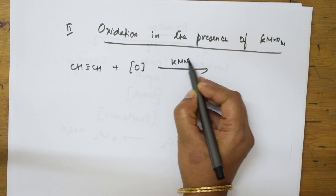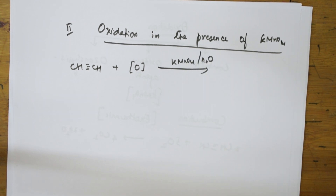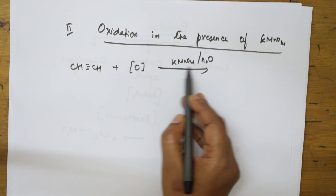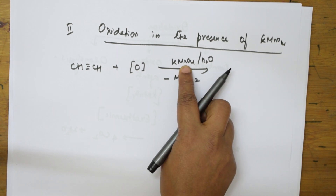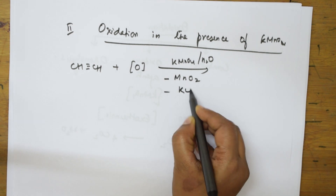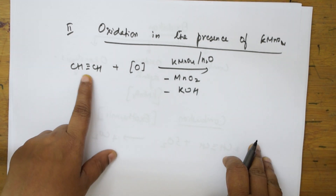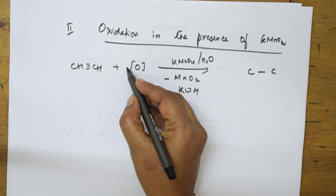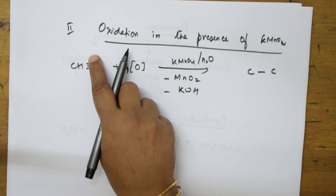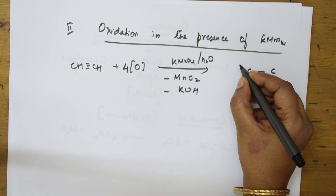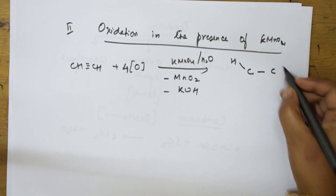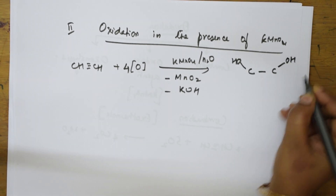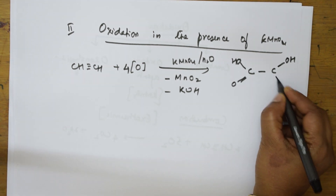This whole reaction occurs in the presence of KMnO₄ and water. The first important thing to remember is that whenever oxygen is added in the presence of KMnO₄, MnO₂ is first removed, and then potassium hydroxide (KOH) is also removed. What we get is a carbon-carbon compound. I am going to add four nascent oxygens — those four nascent oxygens break the triple bond. One oxygen adds here, one more oxygen adds here, then a double bond O (third one), and double bond O (fourth one).